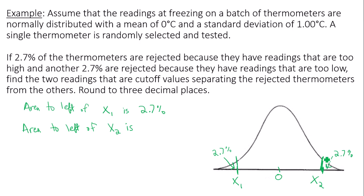Well, if the entire area under my curve adds up to 1 or 100%, I can find the area to the left of my second data value by taking 100% and subtracting this right tail.